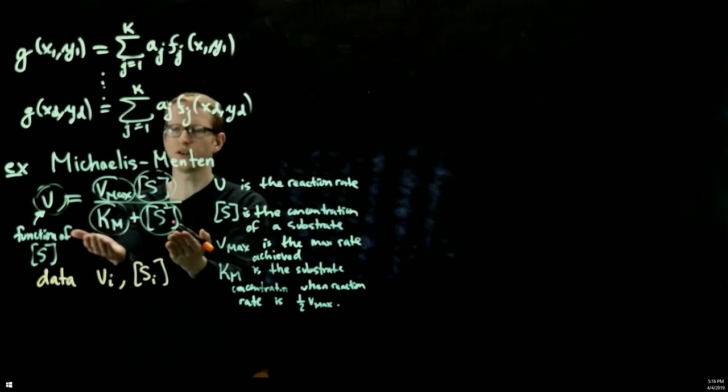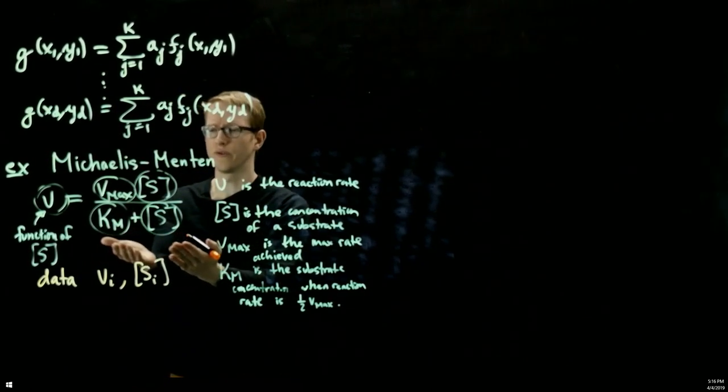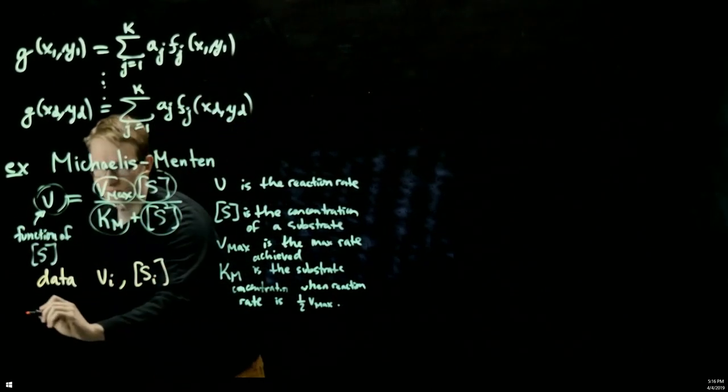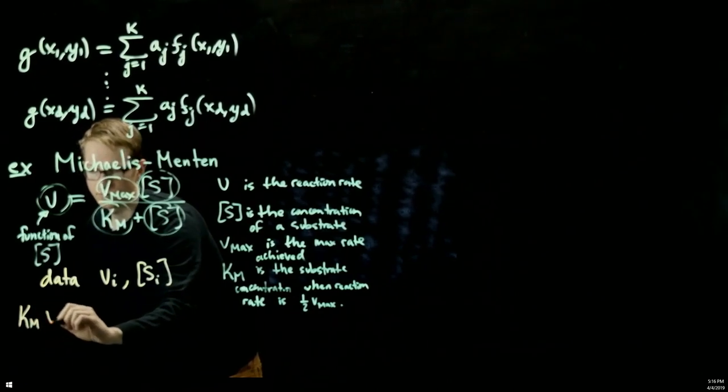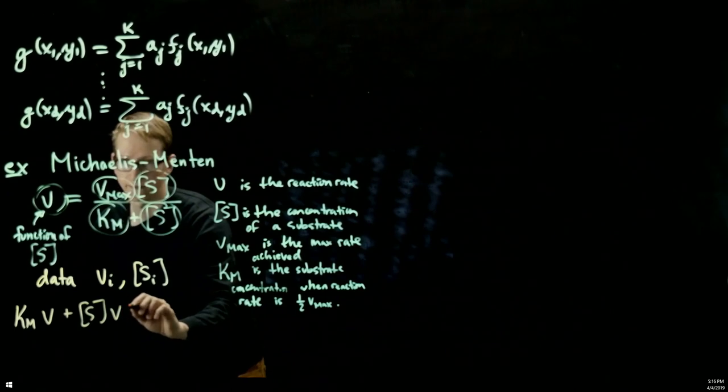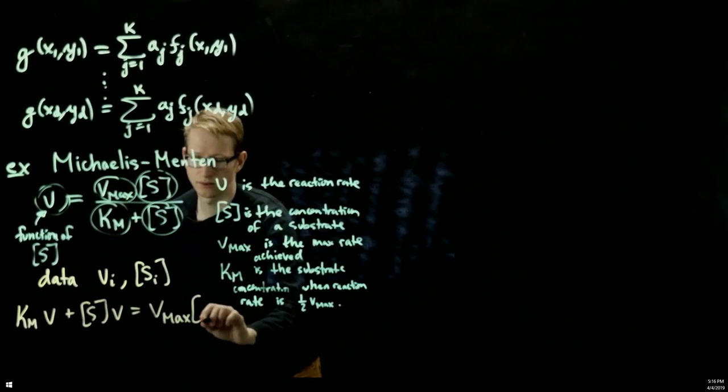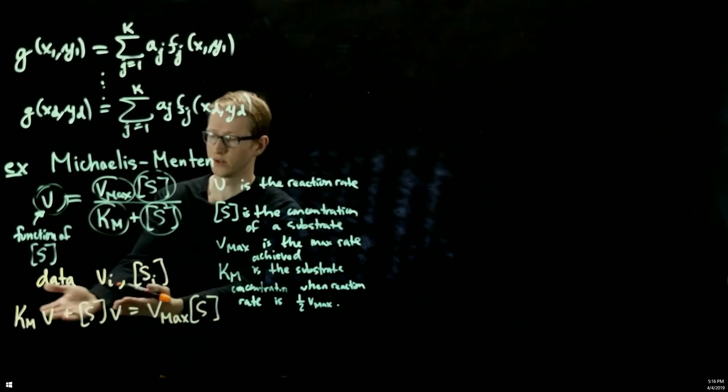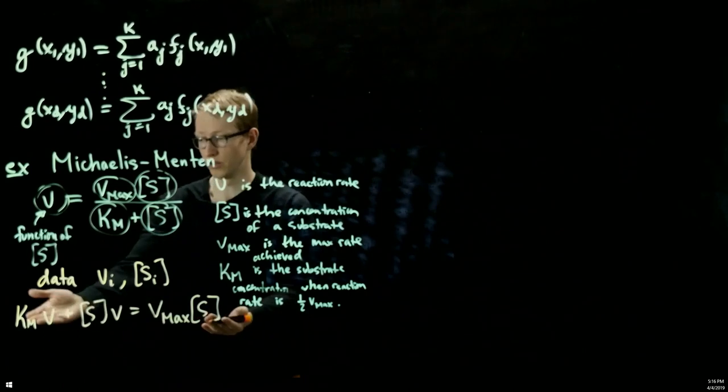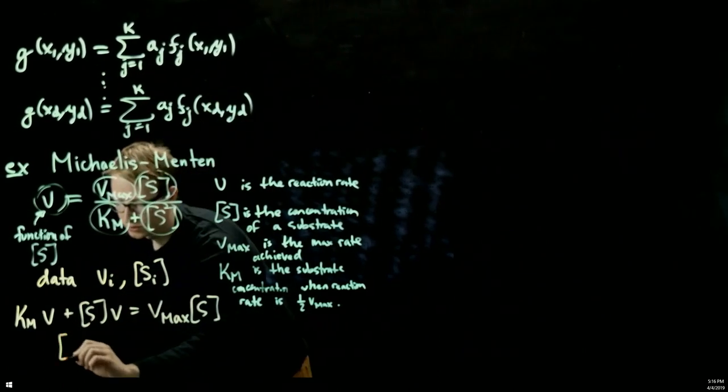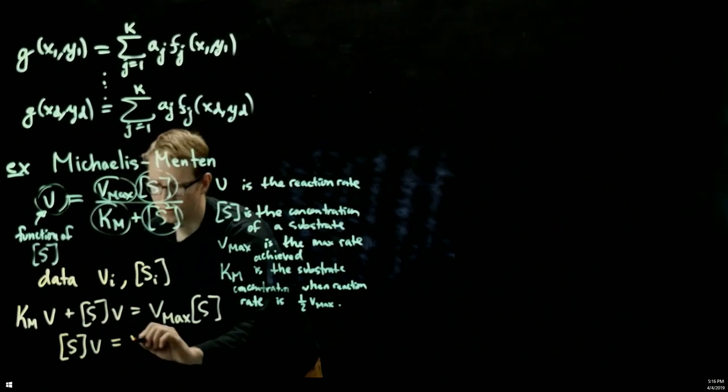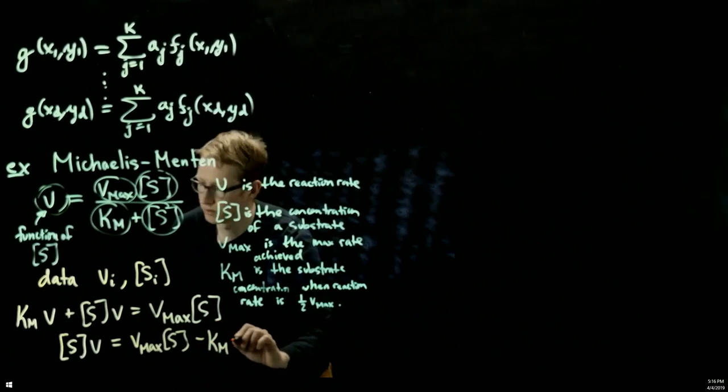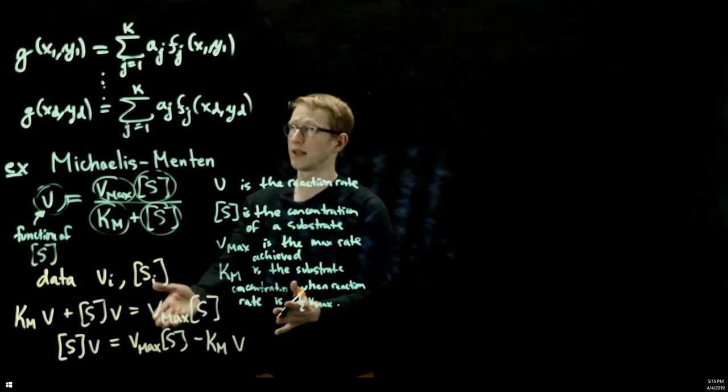This isn't a linear combination of functions with the unknown coefficients in front of them. So what you can do is you can multiply out the denominator on both sides, and then you can isolate, for instance, by solving for one of these functions in terms of the others, where our coefficients are unknowns, move those to one side. So this looks like sv equals vmax s minus kM v.